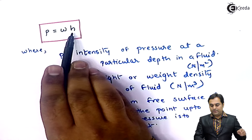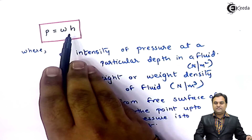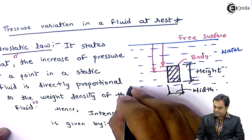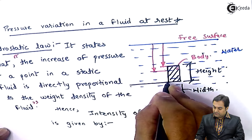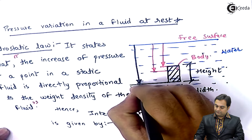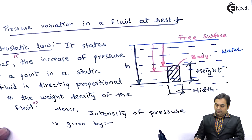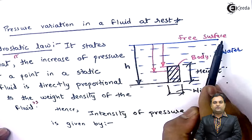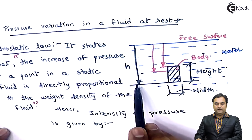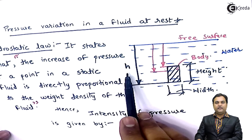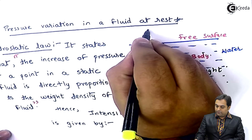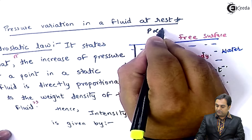As h changes, pressure changes accordingly. If I show it on the diagram, h will be maximum from the free surface of liquid to the bottom of the body. At this maximum height, the pressure intensity will also be maximum, since pressure intensity is directly proportional to height.